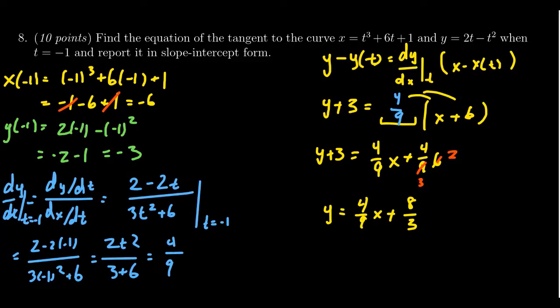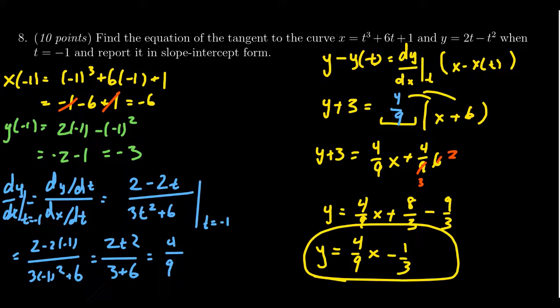I'm going to move this plus 3 to the other side by subtraction. So I'm going to rewrite that as negative 9 over 3. And then combining like terms there, you end up with your slope intercept form version of the tangent line y equals 4 ninths x minus 1 third. And that is our final answer there.